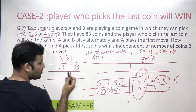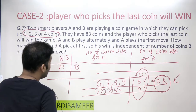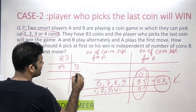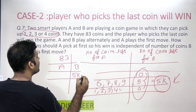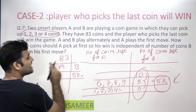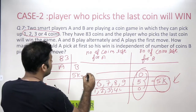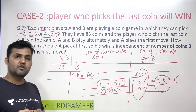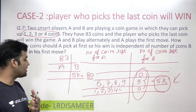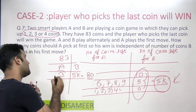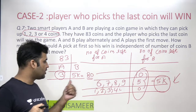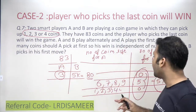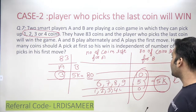Therefore, with 83 coins on the table and A starting the game, what coins should A pick to leave a multiple of five for B? The multiple of five less than 83 is 80. So if A wants to leave 80 coins for B, A should pick three coins in the first move, and A will definitely win the game.